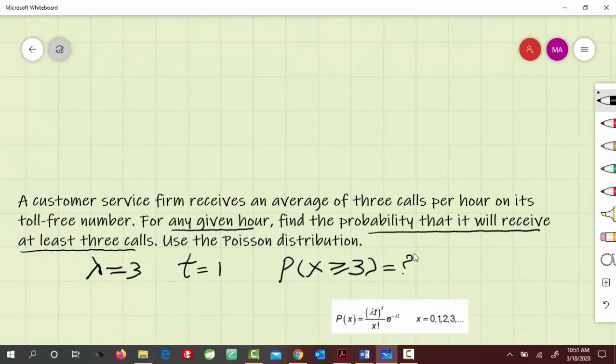The equation for Poisson distribution is P(x) equals lambda t to the x, divided by x factorial, times e to the minus lambda t, where x is 0, 1, 2, 3, and so on.